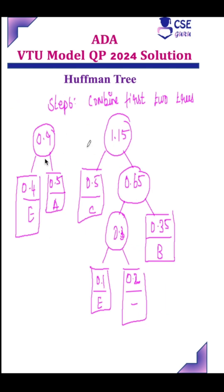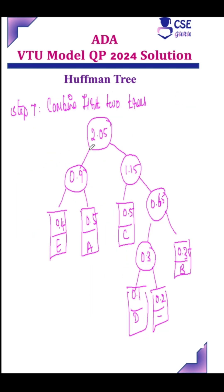Step 7: only two trees are remaining. Combine these two trees, you will get 2.05. Now you've got a single tree. This is nothing but a Huffman tree.